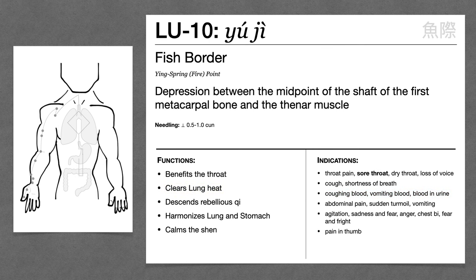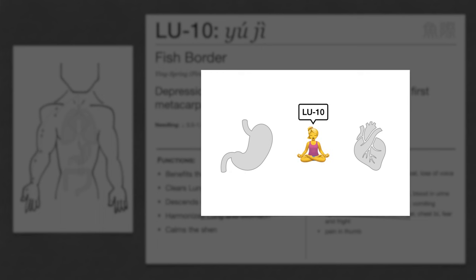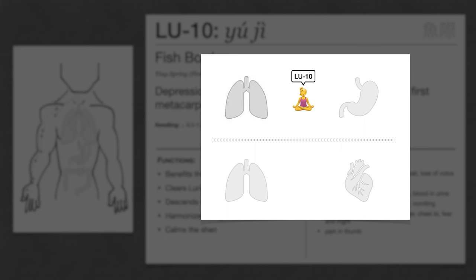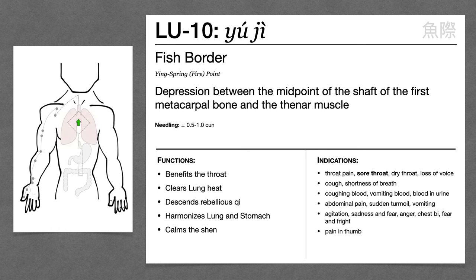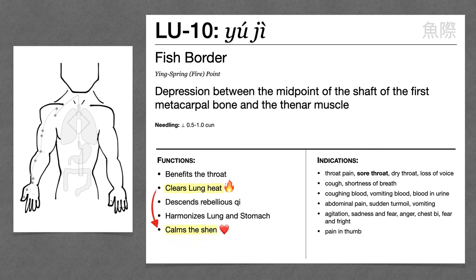Dedman notes that Lung 10 harmonizes the stomach and heart — meaning it harmonizes the relationship between the lung and the stomach, and also between the lung and the heart. Rebellious lung qi and rebellious stomach qi can occur together, so Lung 10 can treat stomach issues like abdominal pain, vomiting, and hiccup. The lung and the heart have a very close relationship, sharing residence in the upper jiao, so heat in the lung can easily transmit to the heart and disturb the shen. By clearing heat, Lung 10 can also calm the shen, treating symptoms like sadness, fear, anger, and mania.